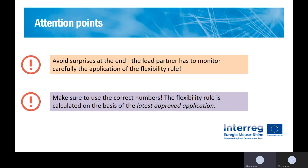Two final attention points. First, avoid surprises at the end — as a lead partner, make sure your partners are not spending much more than what you agreed. Second, use the correct numbers: the flexibility rule is calculated on the basis of the latest approved application form. If you made any changes and your budget has decreased in a certain budget line, you always need to apply the rule on the latest approved version. If you had a major change, the flexibility rule will always be applied on the new version — there is no calculation of what happened before and after.